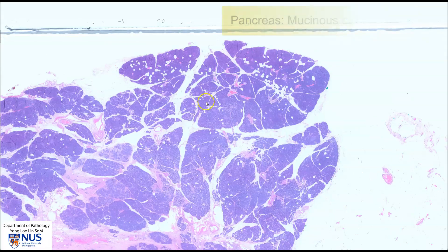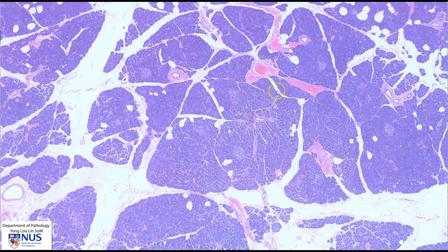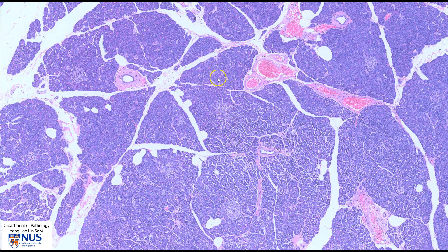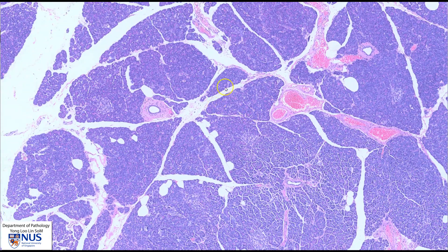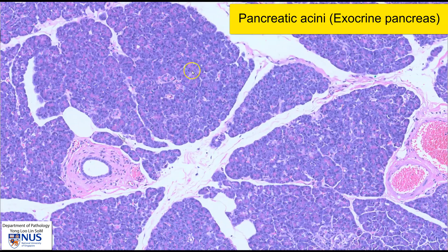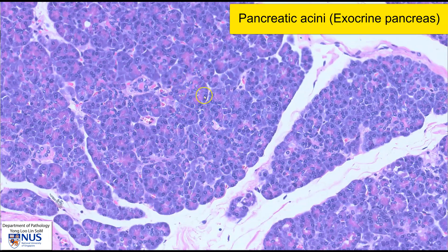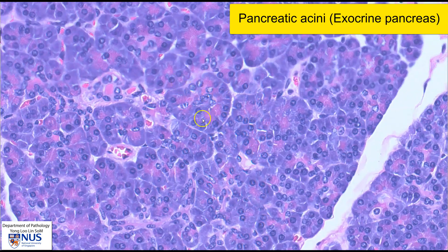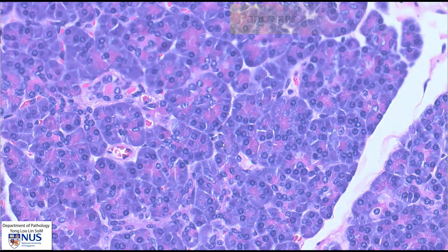Let's have a quick recap of normal pancreatic histology. We can see that the pancreas is composed of these lobules of acinar cells, and these acinar cells form grape-like rounded structures, or acini, and these cells produce our digestive enzymes. They are the exocrine component of the pancreas.